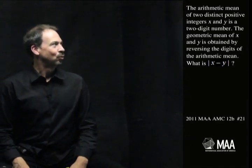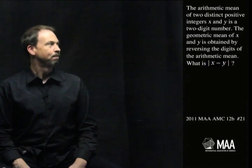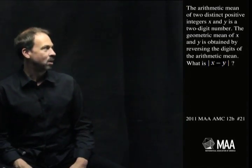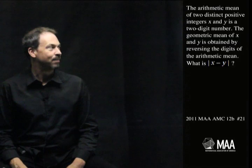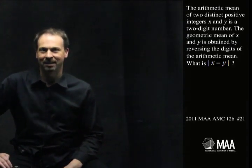The arithmetic mean of two distinct positive integers x and y is a two-digit number. The geometric mean of x and y is obtained by reversing the digits of the arithmetic mean. What's the absolute value of the difference of these two numbers?